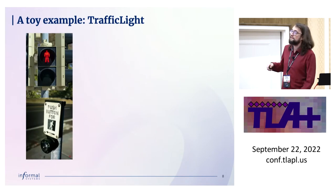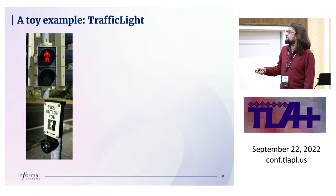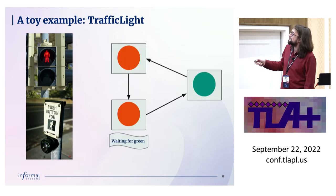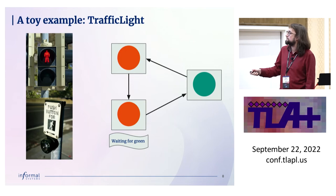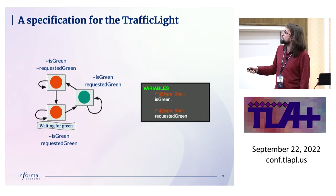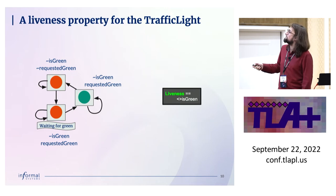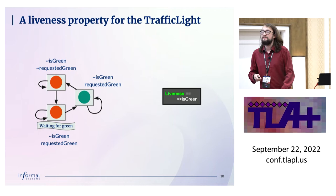I'm going to use a very simple toy example to explain the concepts — a traffic light. The light can be either red or green, and there's a button which can either be pressed or not. If the button is pressed, you request that the light should change to green. There are just three states: light is green, light is red, or light is red and you've pushed the button waiting for it to turn green. The specification uses two variables: one for whether the light is green or red, and one for whether the button has been pushed.